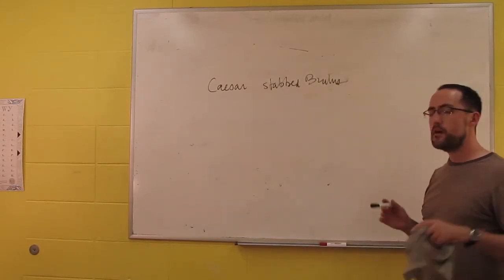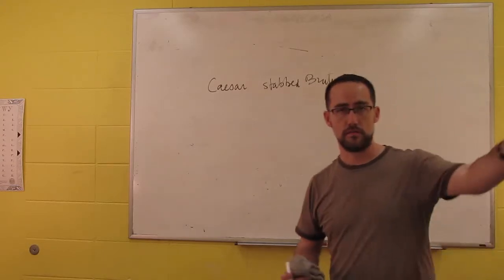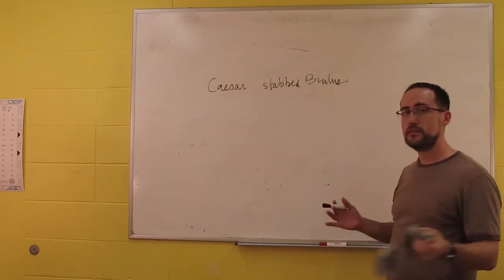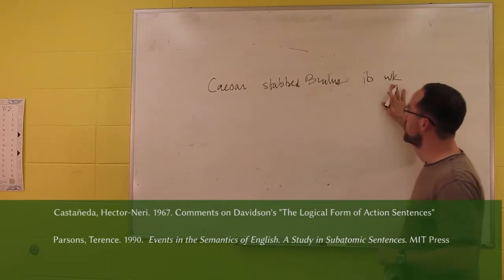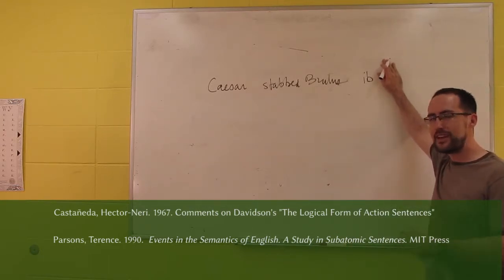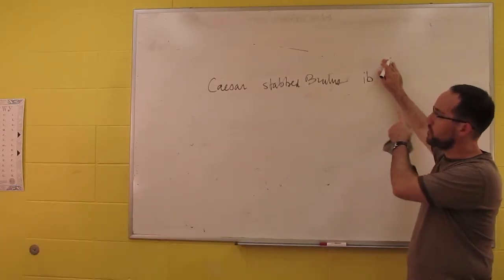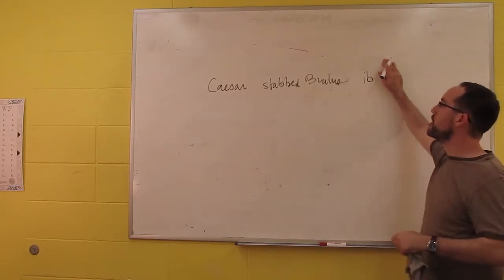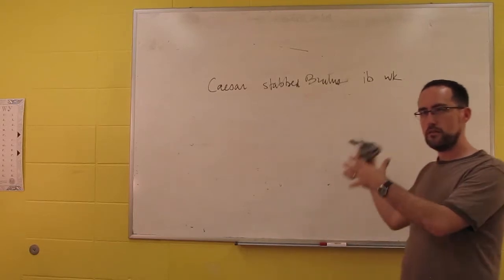What was noticed, almost immediately — first by Castaneda and then taken up later by Terence Parsons — is that, yes, you can take the adjuncts off, and each adjunct would entail the rest of the sentence without it. So if he stabbed him in the back with a knife, that entails that Caesar stabbed Brutus in the back. But that also applies for the other arguments.